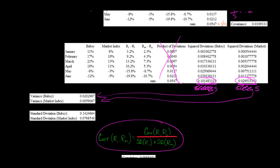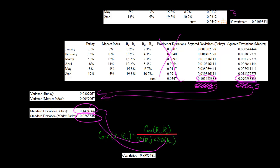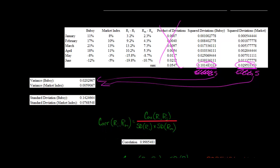Now I've reproduced the correlation formula from above. We know the covariance — 0.0109333 — and we divide it by the cross volatilities, meaning the standard deviation for Bubsy times the standard deviation for the market index. Taking that covariance and dividing by these cross volatilities gives us a correlation of 0.9985481. This is the correlation of the stock returns for Bubsy and the market index — a very high and positive correlation, meaning they move together.